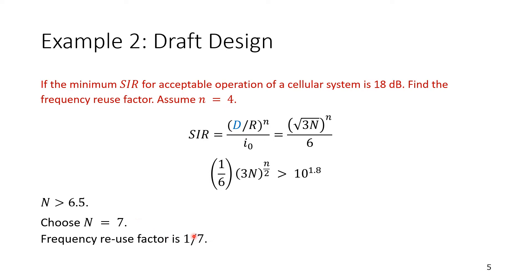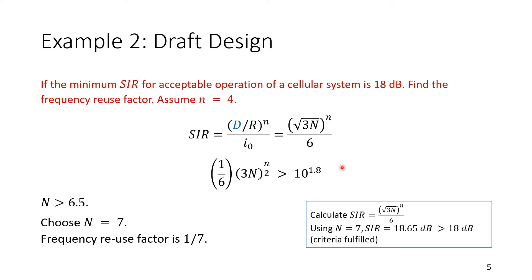This is a rough analysis because the equation implicitly assumes capital N = 7 and equal distances. Substituting N = 7 back into the equation gives a received SIR of 18.65 dB. If we used exactly N = 6.5 we would get exactly 18 dB, but since N = 7 we get 18.65 dB, which is good enough because it exceeds the 18 dB requirement.